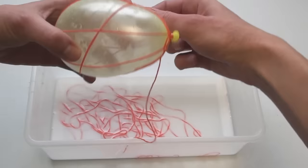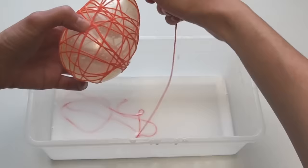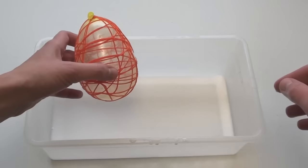Next, just wrap the string in all sorts of directions. Try your best to fill in any spaces with the string. At the same time I'm wrapping, I'm slightly squeezing off the excess glue back into the container with my thumb and first finger.